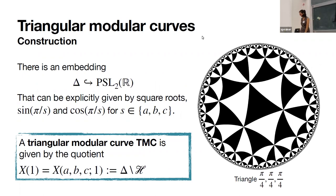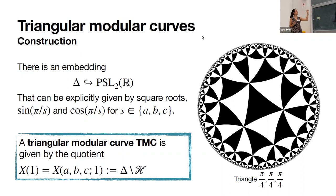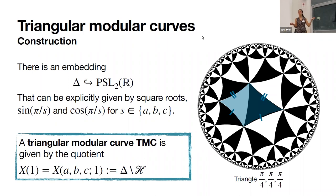With those triangle groups in mind, we can define triangular modular curves. We define an embedding from our triangle group Δ into 2×2 matrices over ℝ. With this explicit embedding, we construct an action of the triangle group over the upper half-plane. Our triangular modular curve is given by a quotient of the action of this triangle group over the hyperbolic plane. For example, with the triangle group (4,4,4) — a triangle with angles π/4, π/4, π/4 — when we consider this quotient, we get a P¹, which is compact. Proved by example.